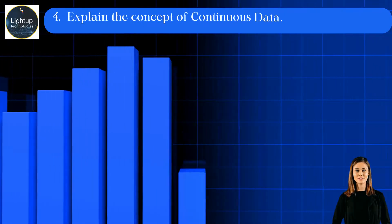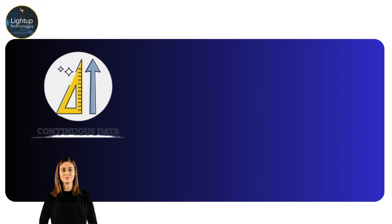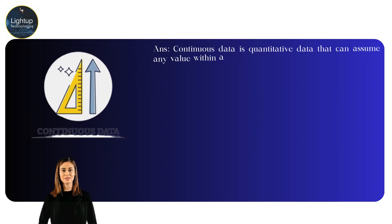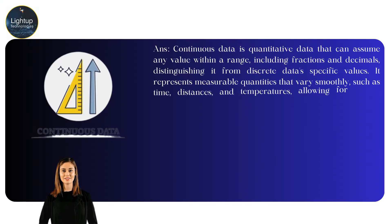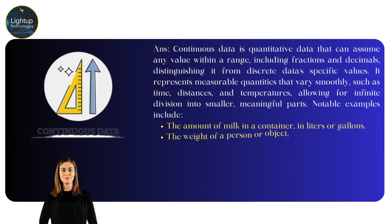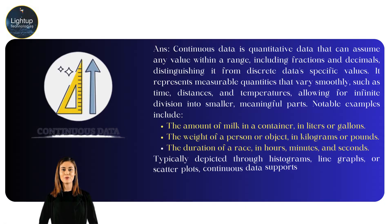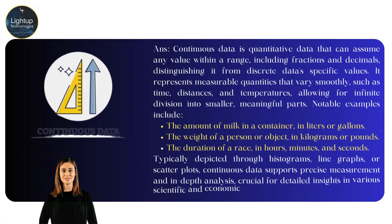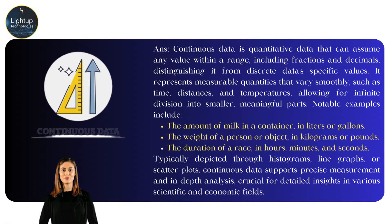Explain the concept of continuous data. Continuous data is quantitative data that can assume any value within a range, including fractions and decimals, distinguishing it from discrete data's specific values. It represents measurable quantities that vary smoothly, such as time, distances, and temperatures, allowing for infinite division into smaller, meaningful parts.